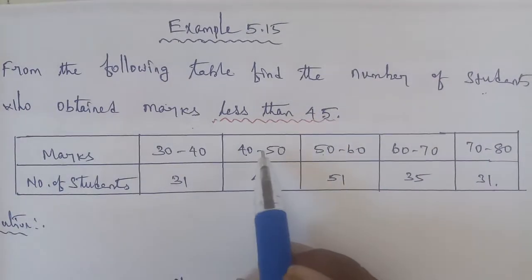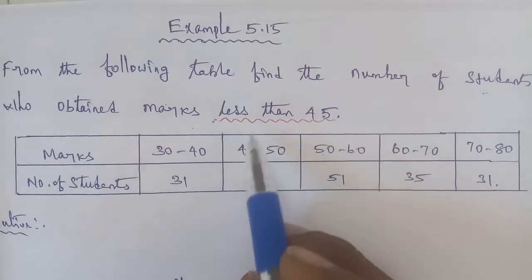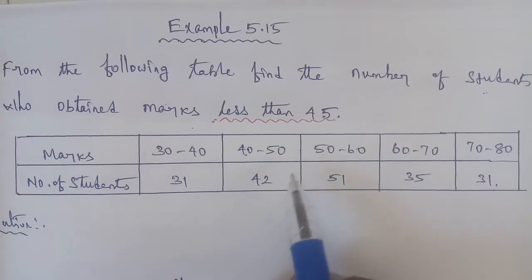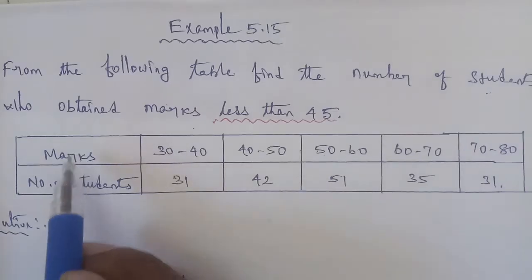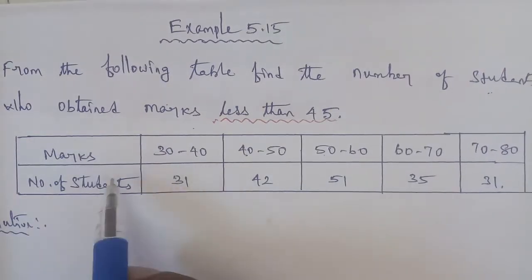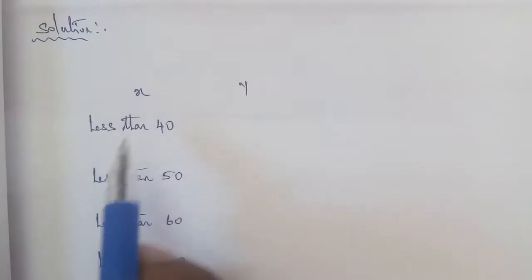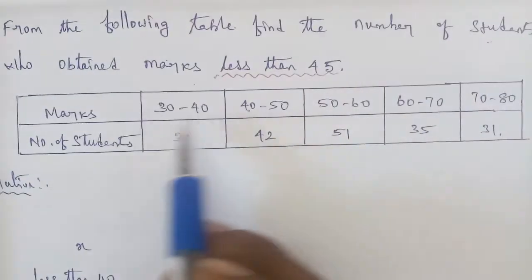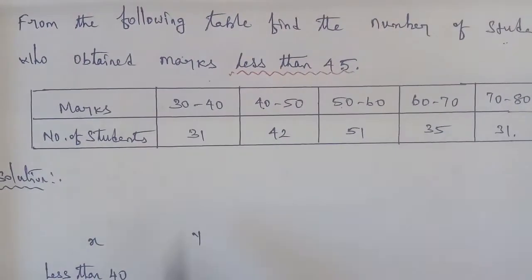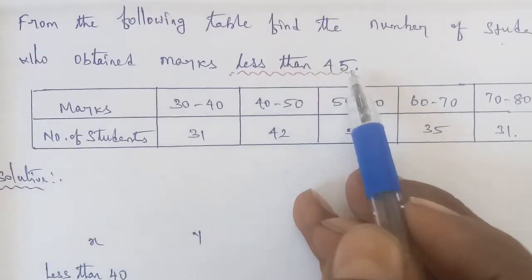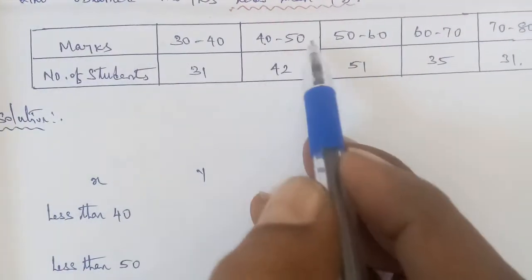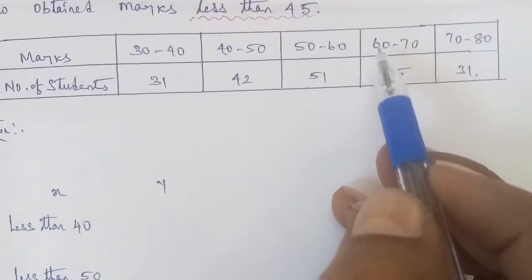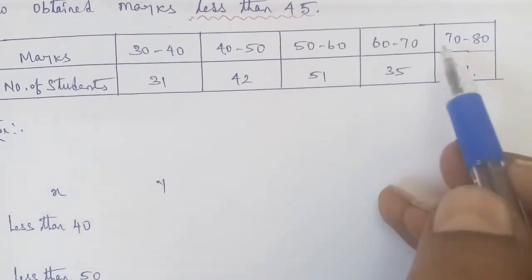So in the data, the target becomes less than 45. For less than 45 marks, we find the number of students. We convert the data into a cumulative 'less than' series: less than 40, less than 50, less than 60, less than 70, less than 80.